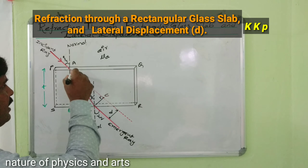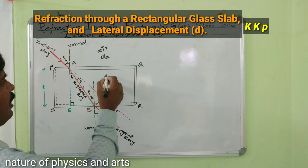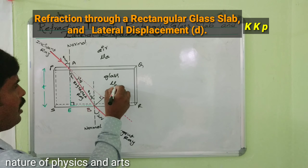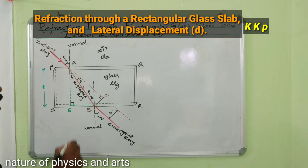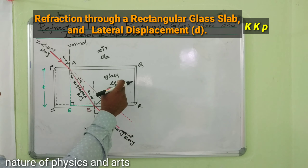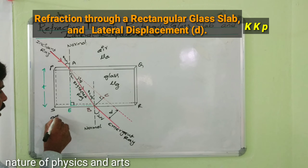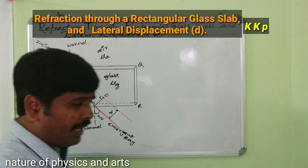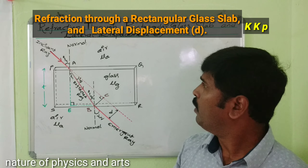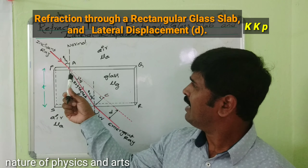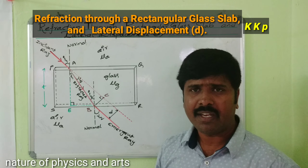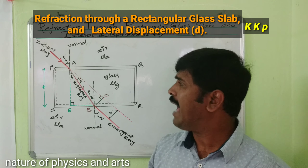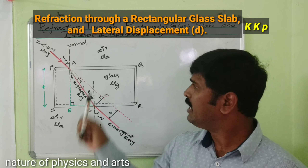When light travels from a rarer medium to a denser medium, it bends towards the normal in the denser medium. This is the actual path — light bends towards the normal. The denser medium is glass with refractive index mu_G. Now light is traveling from glass to air, with refractive index mu_A. So we have: first, air to glass, and second, glass to air.